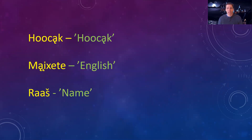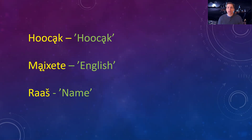The three words we need to know for this lesson are Ho-Chunk, which means Ho-Chunk. The next word is Mai-Chateh. Mai-Chateh literally means big knife or long knife, and that is what we call Europeans or people of European descent when they came here. For our purposes today though, it also means the language that is spoken — English. And the last word we need to know is Ra-Sh, which means name.